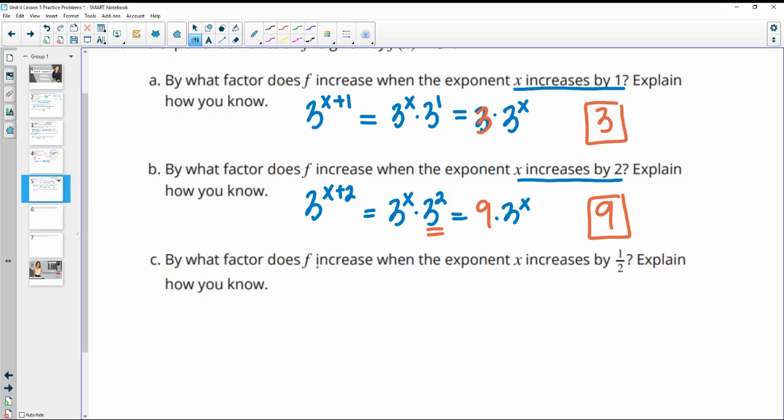So then what would happen if x increases by a factor of a half? So it would stand to reason, since this was 3 squared, 3 to the 1st, that this is just going to be 3 to the 1 half, which you could also write as square root of 3.